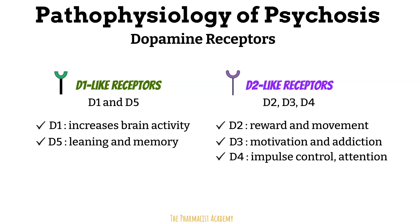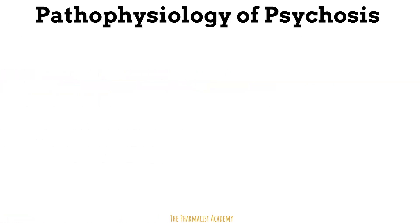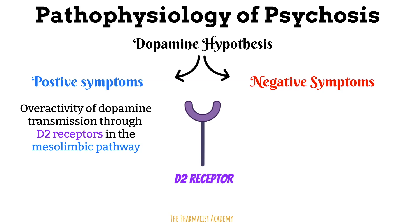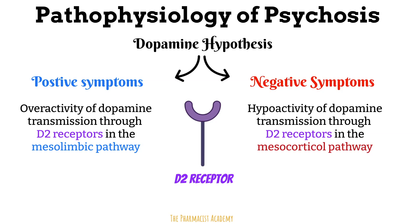Now with a solid foundation on dopamine and its receptors and pathways, we can discuss the pathophysiology of psychosis. Prior to the 1950s, the pathophysiology of psychosis was not well understood. The dopamine hypothesis, which gained popularity in the 1950s, addressed both positive and negative symptoms. Positive symptoms like hallucinations, delusions, and disorganized thinking are caused by overactivity of dopamine transmission through D2 receptors in the mesolimbic pathway. Negative symptoms like social withdrawal, anhedonia, and avolition are caused by hypoactivity of dopamine transmission in the mesocortical pathway.